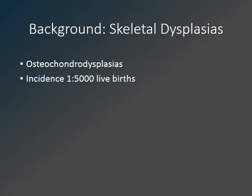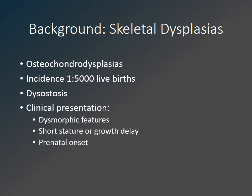In contrast, a dysostosis refers to a problem that occurs during blastogenesis in the first 6 weeks of fetal life. This may result in abnormal bone formation, but only in the affected bone or group of bones. The clinician begins by suspecting that a skeletal dysplasia may be present, often based on dysmorphic features of the child or shortened limb segments or short stature.